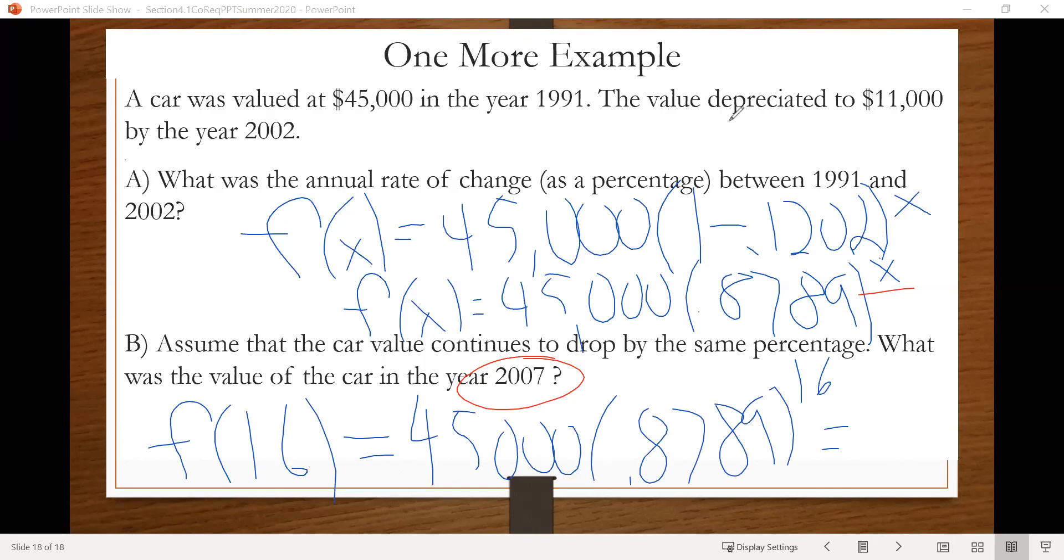If we plug that all in the calculator, it looks like our car after that amount of time or in 2007 is going to be worth $5,704.85. All right. That's it for section 4.1. Thank you for watching.